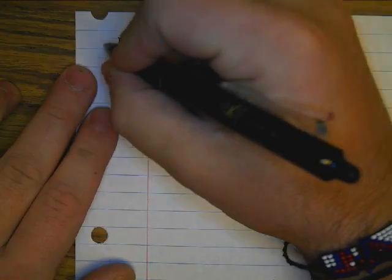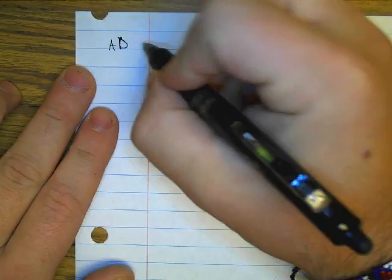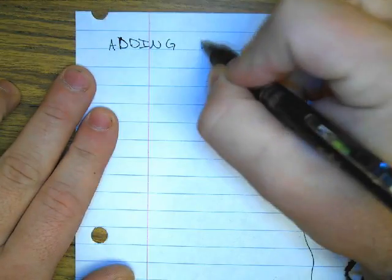We'll draw a line down the middle. On the left-hand side, we'll write adding fractions.